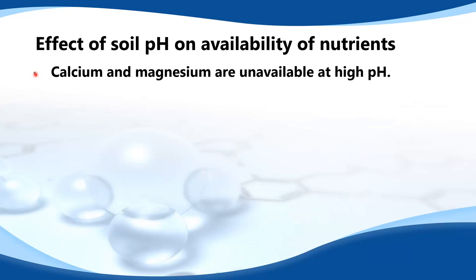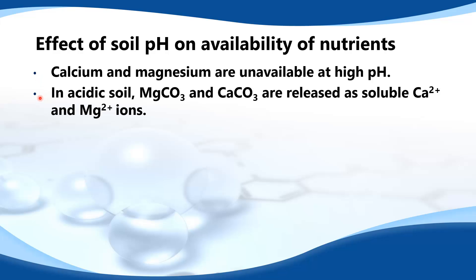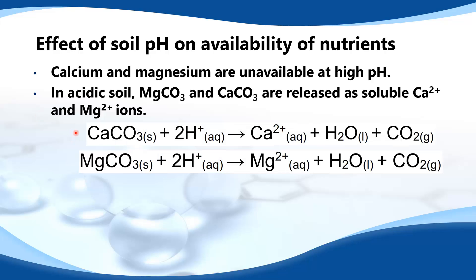Next we look at calcium and magnesium. Calcium and magnesium are unavailable at high pH. In acidic soil, magnesium carbonate and calcium carbonate are released as soluble Ca²⁺ and Mg²⁺ ions. Calcium carbonate reacts with H⁺ ions to form Ca²⁺ ions, and magnesium carbonate reacts with hydrogen ions to form Mg²⁺ ions.